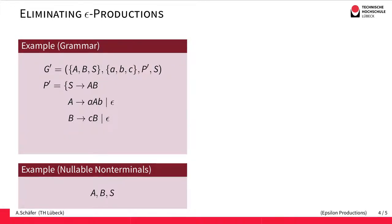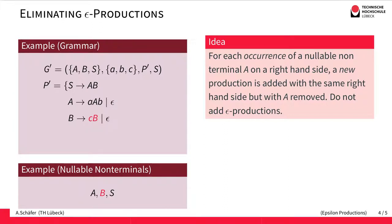Now that we have found the nullable non-terminals, we establish a procedure for eliminating the epsilon productions. The idea is to take each nullable non-terminal and each occurrence on the right-hand side of a production, and simply remove it — simulating the idea that we could derive the empty word from it. We do this without adding new epsilon productions. For example, since B is nullable and we have a right-hand side with C followed by B, we add a new right-hand side containing just C, with B removed.